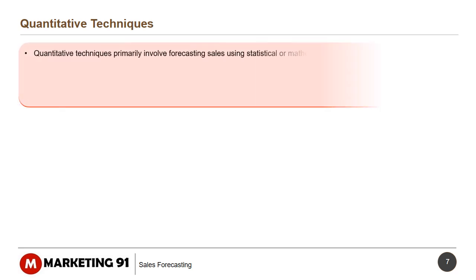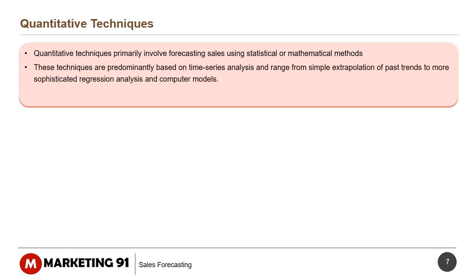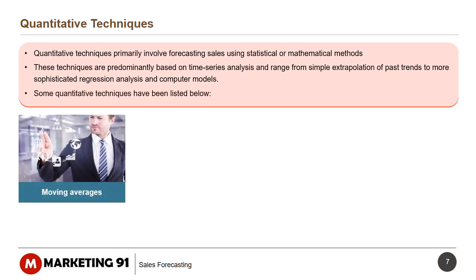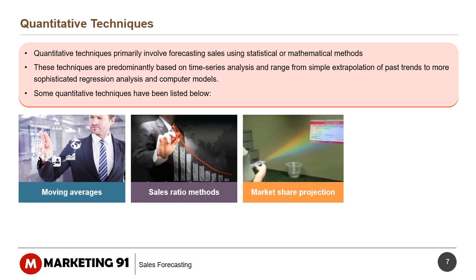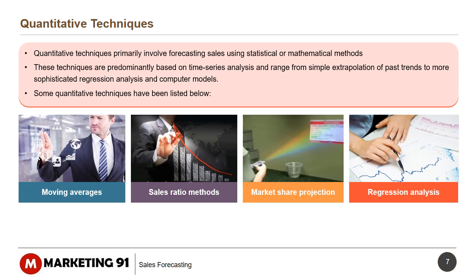Quantitative Techniques primarily involve forecasting sales using statistical or mathematical methods. These techniques are predominantly based on time series analysis and range from simple extrapolation of past trends to more sophisticated regression analysis and computer models. Some quantitative techniques include: Moving Averages, Sales Ratio Methods, Market Share Projection, and Regression Analysis.